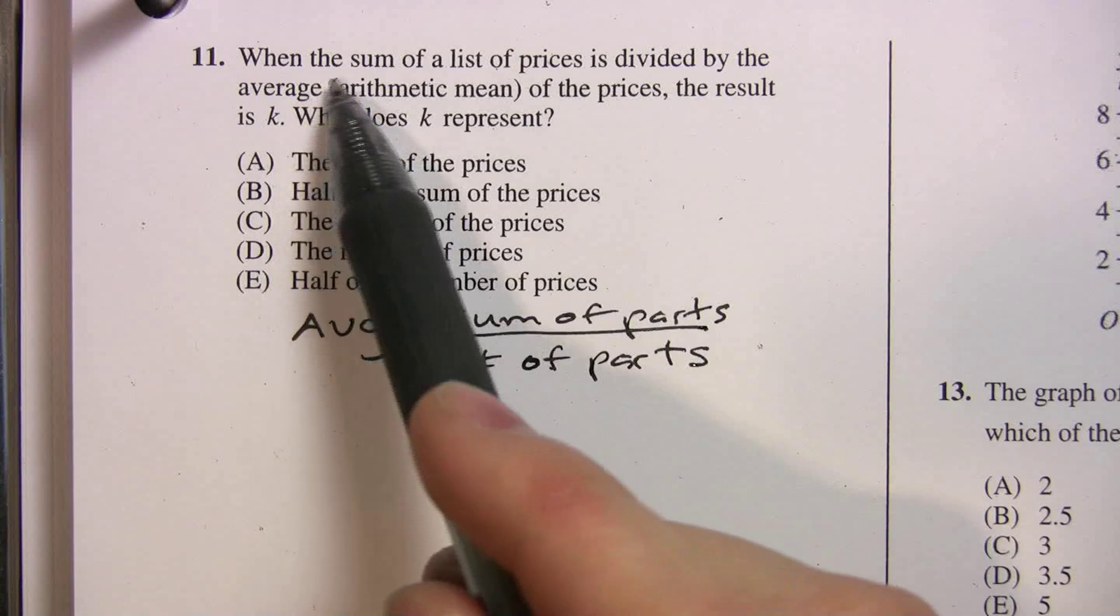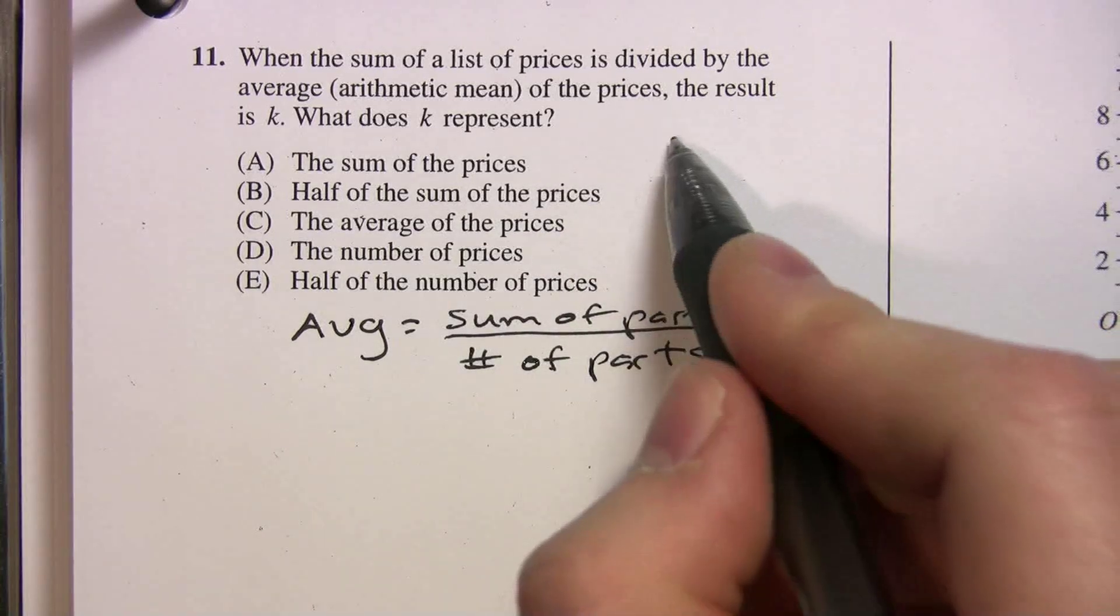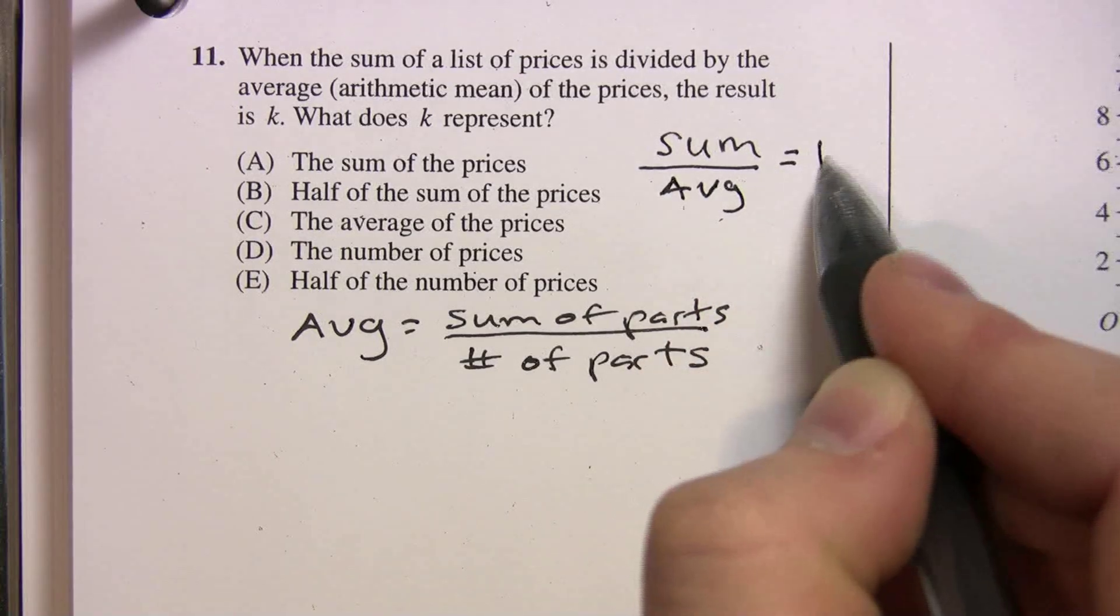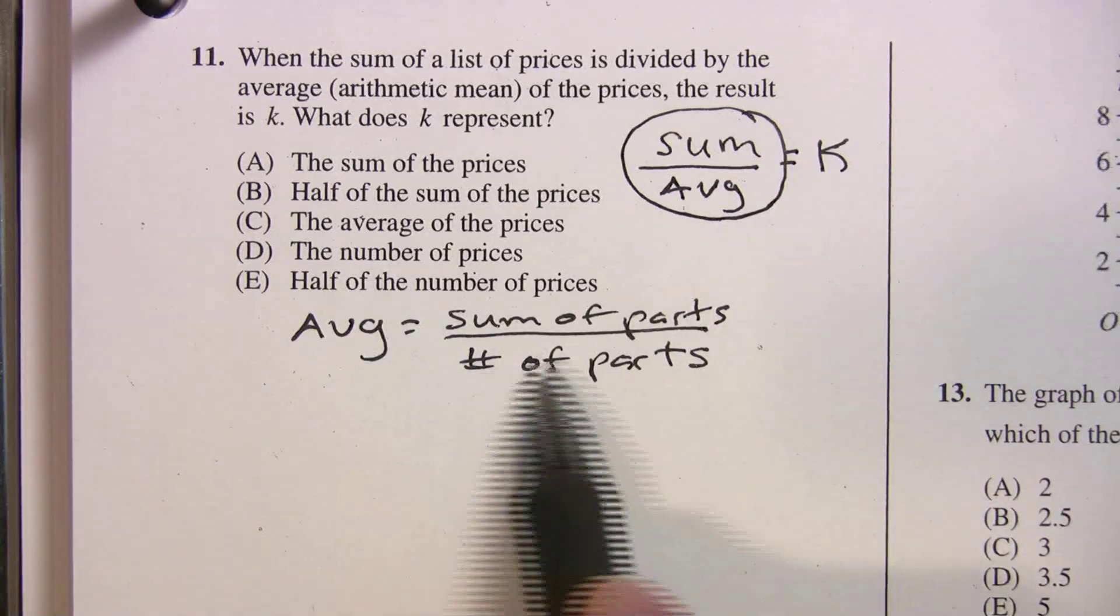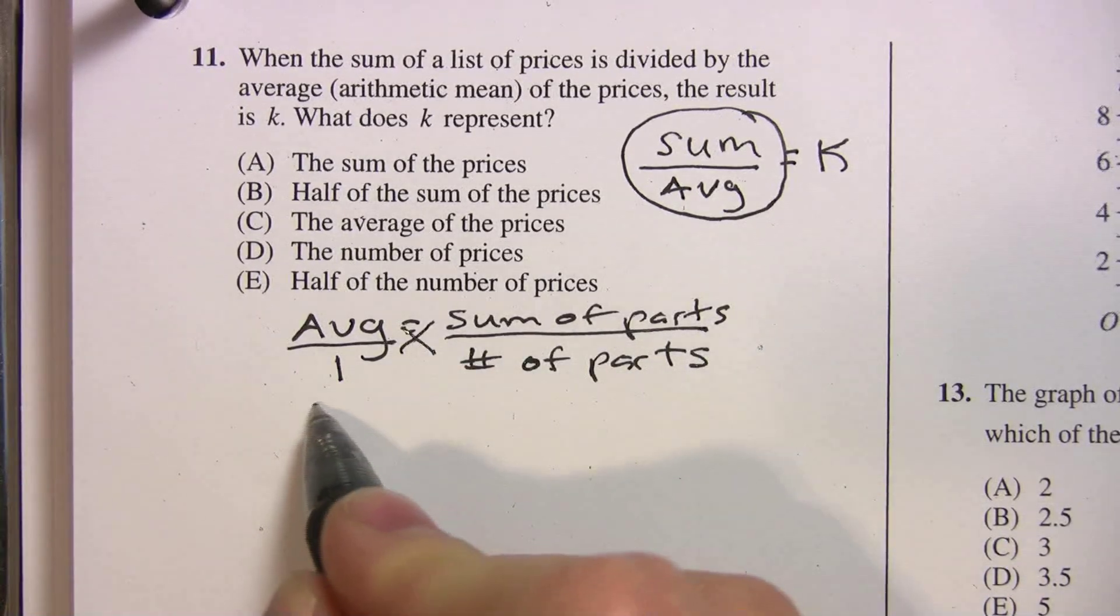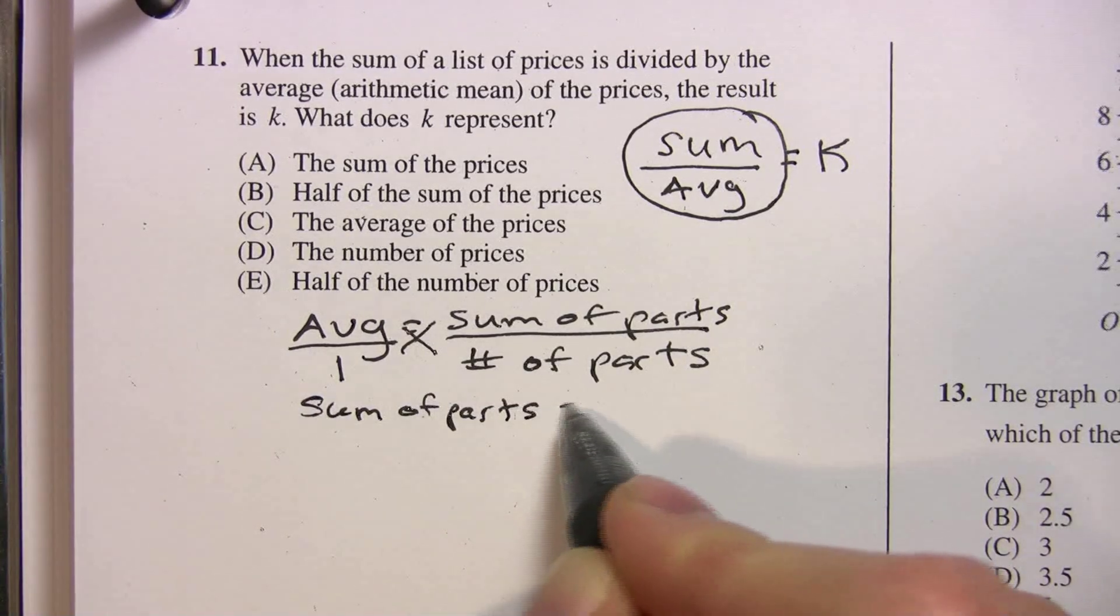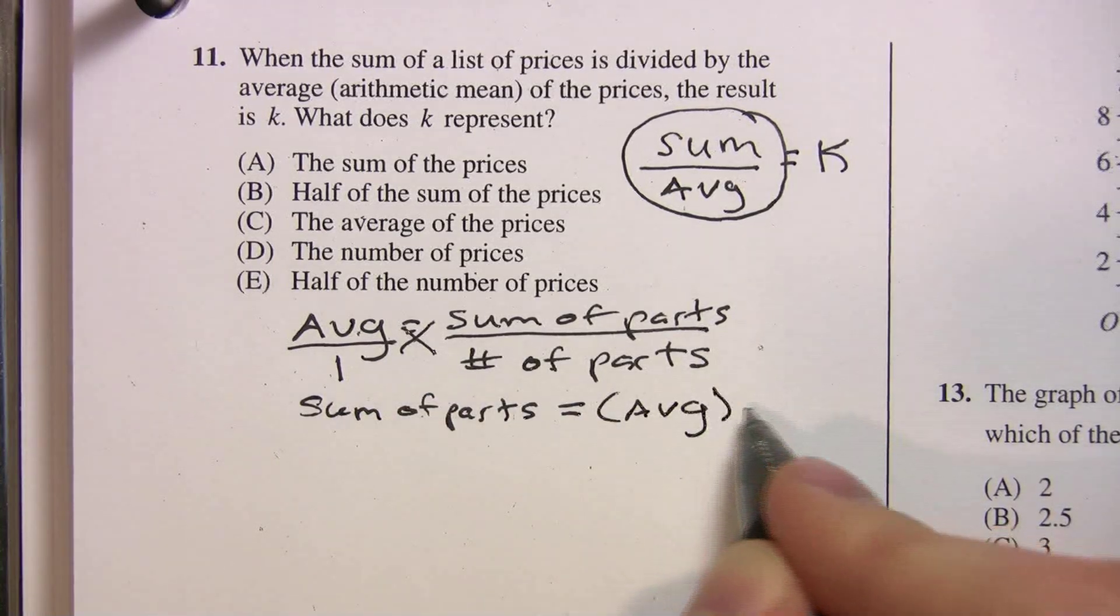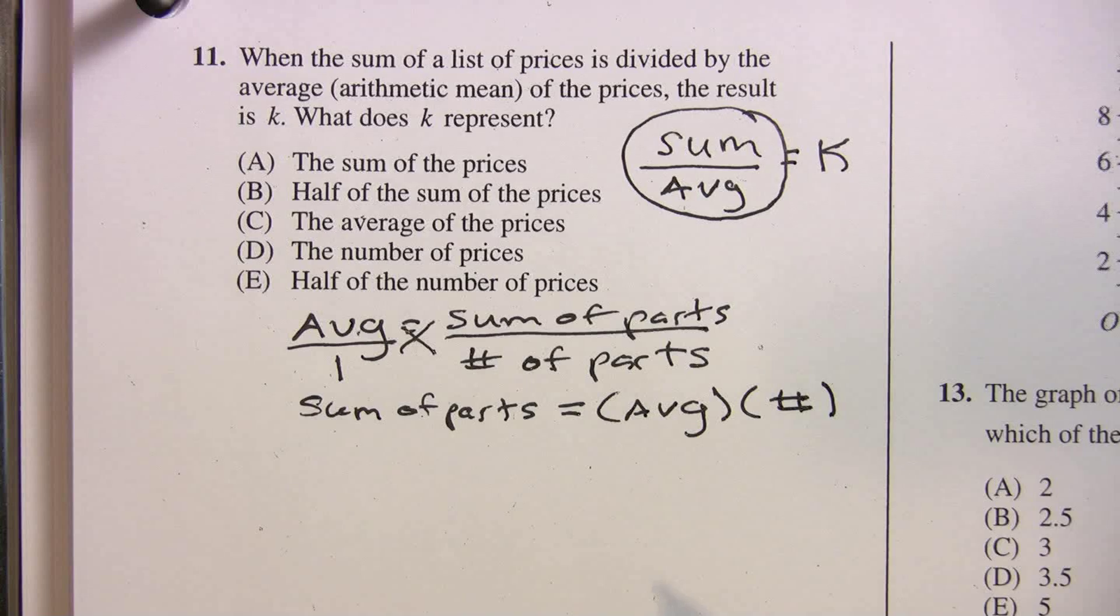So what is our goal here? What are we looking for? When the sum of a list of prices is divided by the average, the result is k. So we're looking for, our goal is to get sum divided by average. That's what equals k. So let's see if we can get sum over average. And we're going to do that by using our formula here. So we can put average over one. And now we're going to cross multiply. So we'll get the sum of parts equals average times the number. So average times, and I'm just going to write number here. But we know that's the number of parts.